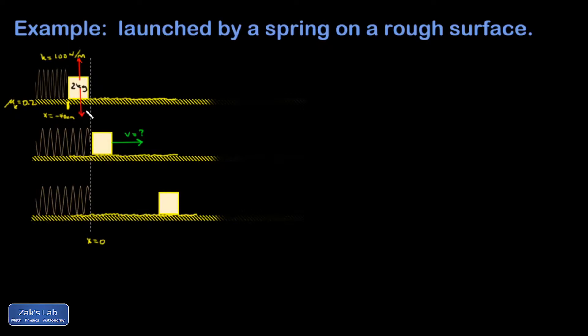And of course, gravity is pulling down with a magnitude of mg. And the normal force in this case is just equal to mg. 2 times 9.8 is 19.6 newtons. The normal force is equal to mg because there's no other vertical forces messing around with this problem.